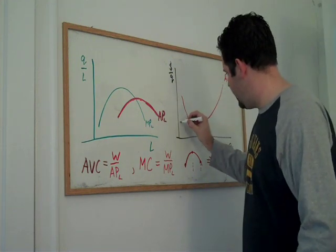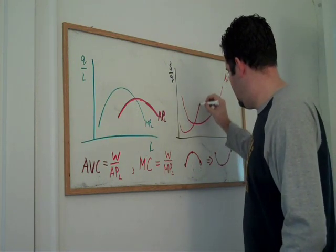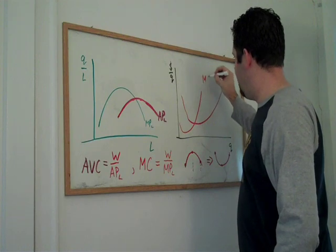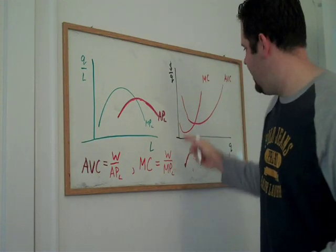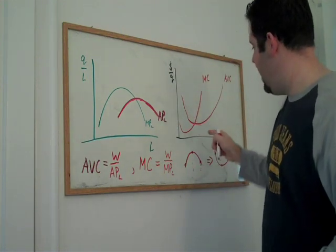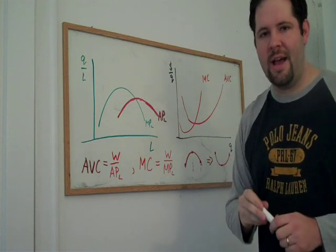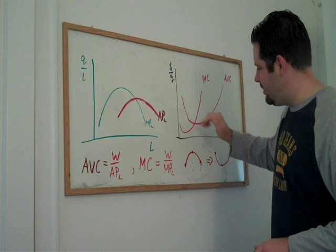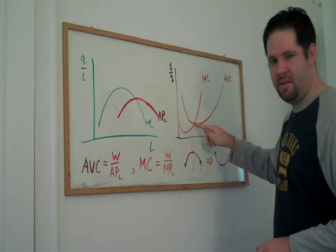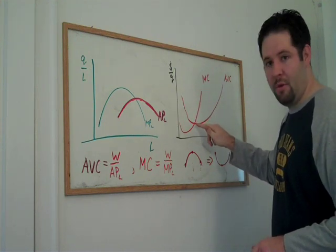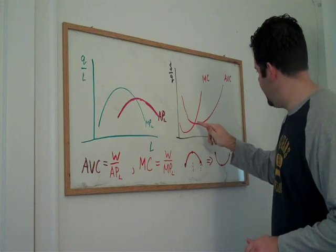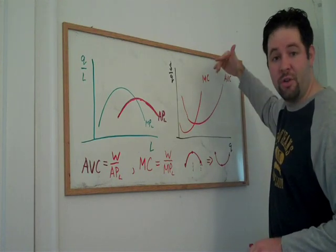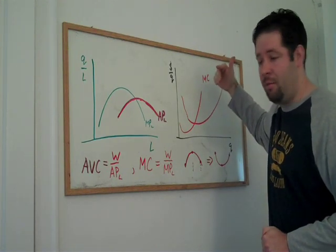The marginal product curve turns into a marginal cost curve, again with a U shape. Notice, just like last time, when marginal cost is below average variable cost, average variable cost is decreasing. It hits a minimum where they intersect, then increases after that because marginal cost is higher than average variable cost.